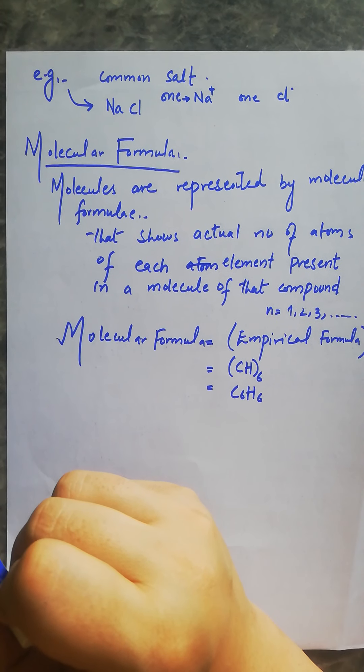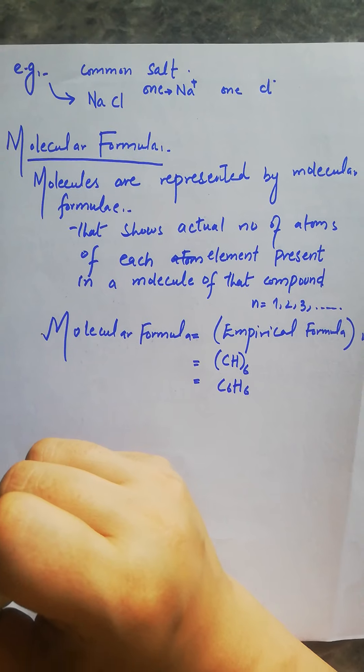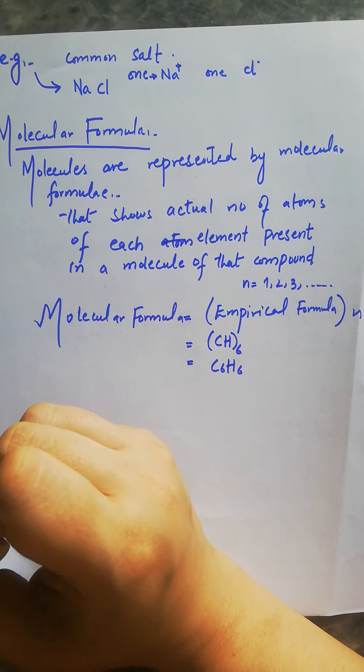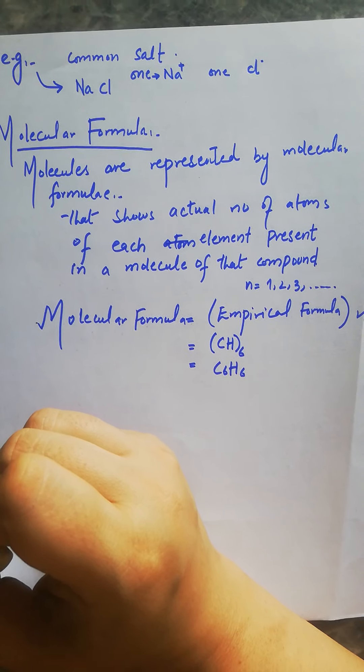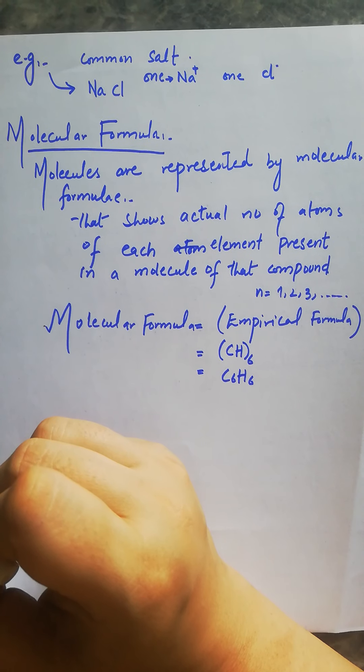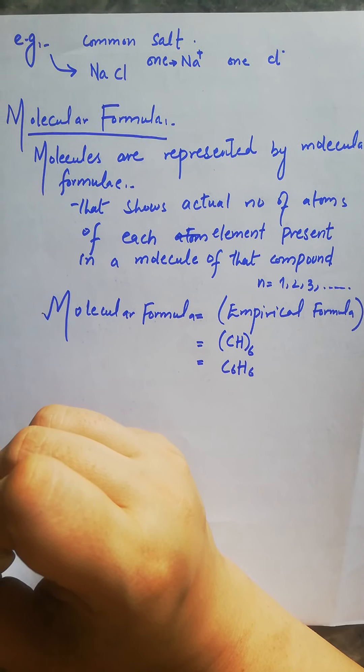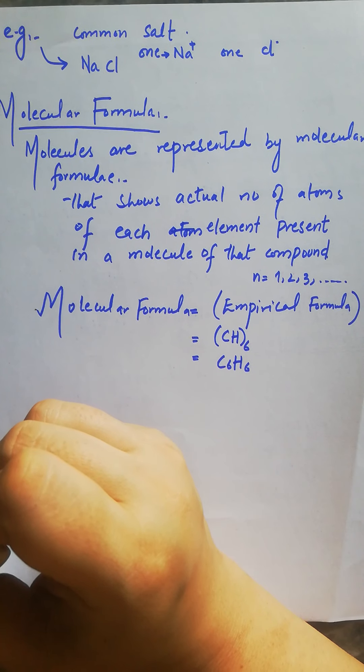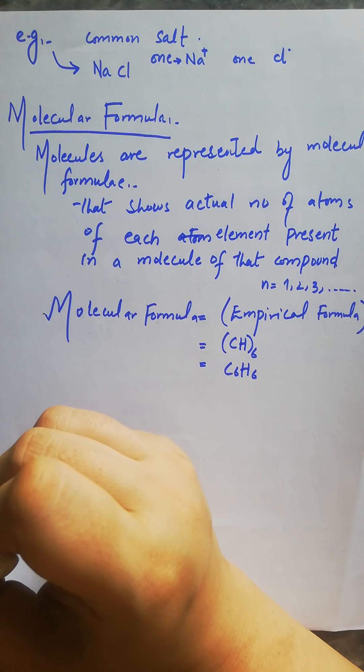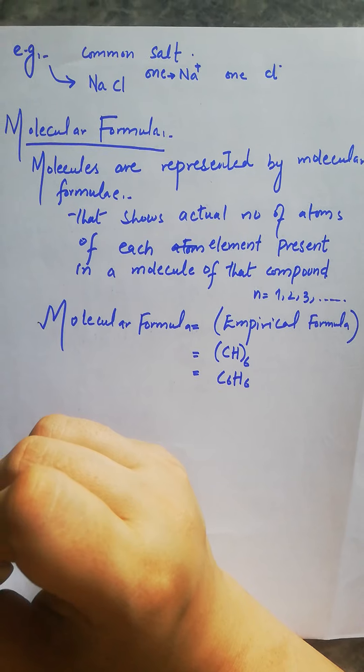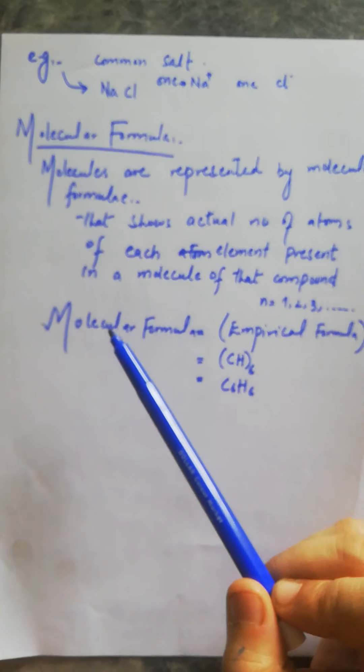As we mentioned, empirical formula shows the simplest whole number ratio between atoms of elements. But molecular formula shows the actual numbers of atoms present in the compound.